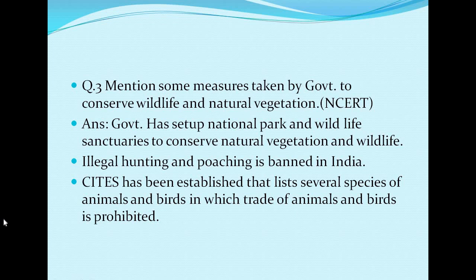The next question: mention some measures taken by our government to conserve wildlife and natural vegetation. The government has set up national parks and wildlife sanctuaries to conserve natural vegetation and wildlife. Illegal hunting and poaching is also banned in India. A program has been established that lists several species of animals and birds in which trade is prohibited. In this way, today's lecture is completed and tomorrow we will meet again with our next lecture. Thank you.